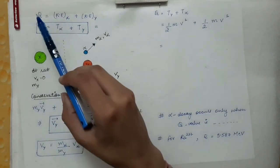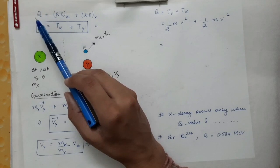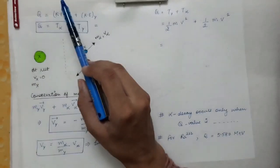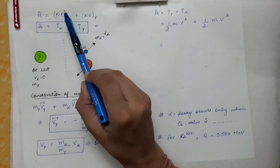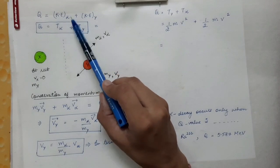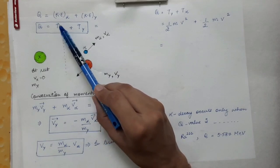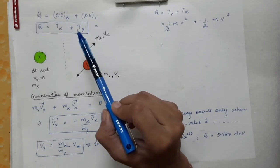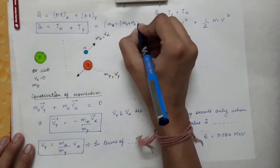The Q value is the energy released in alpha decay, arising from the mass difference between reactants and products. This energy is distributed between the daughter nucleus and the alpha particle as kinetic energy. We can write Q = T_alpha + T_Y, and also Q = (M_X − M_Y − M_alpha) × c².